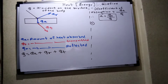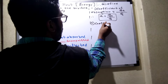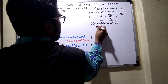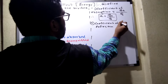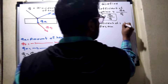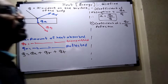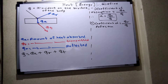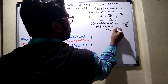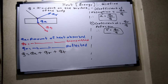Second, the coefficient of reflection. It is defined as the ratio of amount of heat reflected to the total amount of heat incident. The symbol is 'r', and the formula is Qr upon Q.